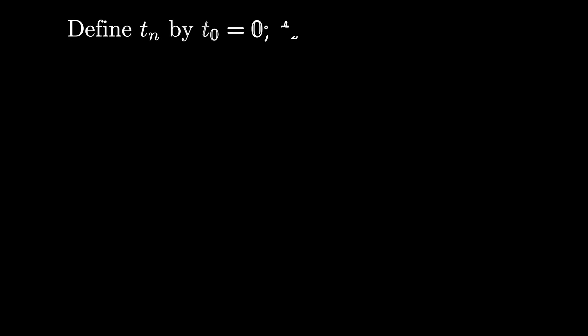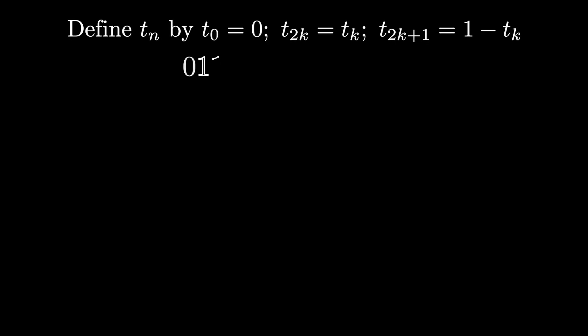Let's see another example. Here's a sequence of zeros and ones defined by the recursive rule that the zeroth entry is zero, and t sub 2k is the kth entry, and t sub 2k plus 1 is 1 minus the kth entry.